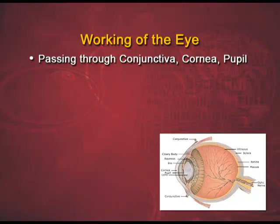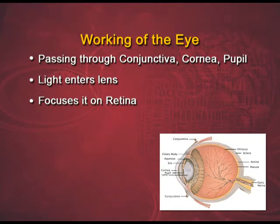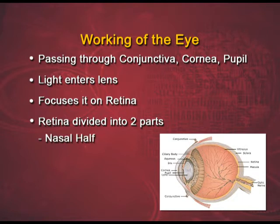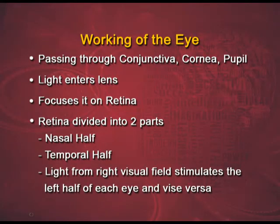Now let us see how the human eye works. Light passes through the conjunctiva, the cornea, and the pupil, and enters the lens. This lens focuses it on the retina. The retina is divided into two parts — the nasal half and the temporal half. The nasal half starts from the nose towards the middle of the fovea, and the temporal half starts from the temple of the forehead till the fovea. The light coming from the right stimulates the left part of both the eyes — that means the nasal half of the right eye and the temporal half of the left eye. Similarly, the light coming from the left stimulates the nasal half of the left eye and the temporal half of the right eye.